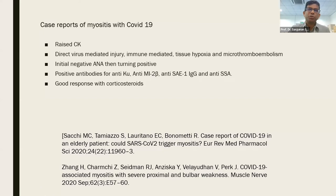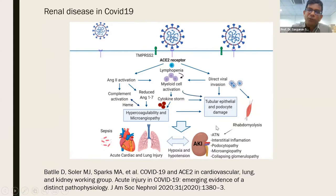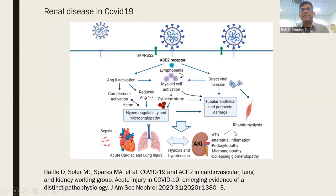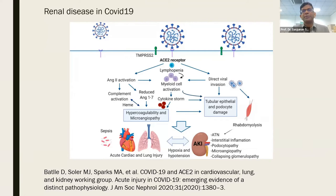The involvement of the kidneys involves a type 3 hypersensitivity reaction — immune-complex-mediated tissue damage, familiar to us from lupus. We see glomerulonephritis, acute tubular necrosis, interstitial inflammation, and collapsing glomerulopathy with proteinuria and hematuria. There could also be a rhabdomyolysis component. Renal disease has been well described in patients, particularly where the anti-nuclear antibody is positive.